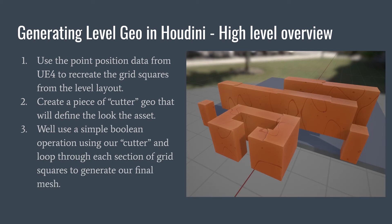For a high-level overview of the process in Houdini: we export all point positions from Unreal, then recreate the basic level layout in Houdini. The gist of this technique is a simple Boolean operation. The first thing that dictates the look of the model is we create what I call a cutter geometry — a simple phrase for the piece of geometry that cuts the other one. We won't go deep into the look development for the cutter geometry today, but if you have questions feel free to reach out to me on Twitter.